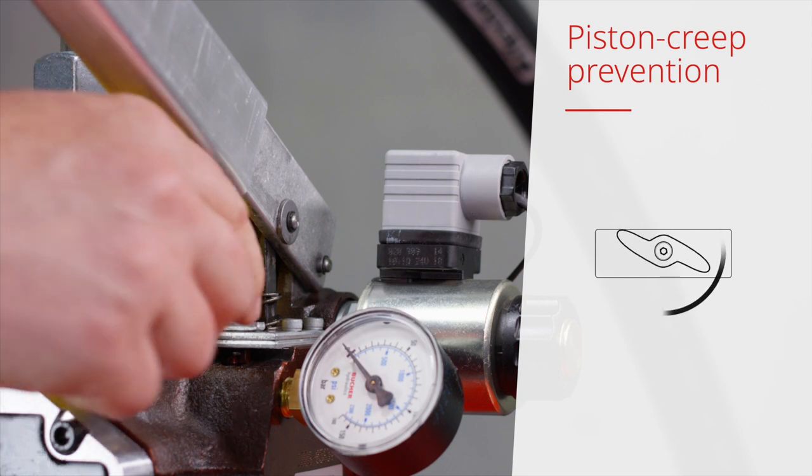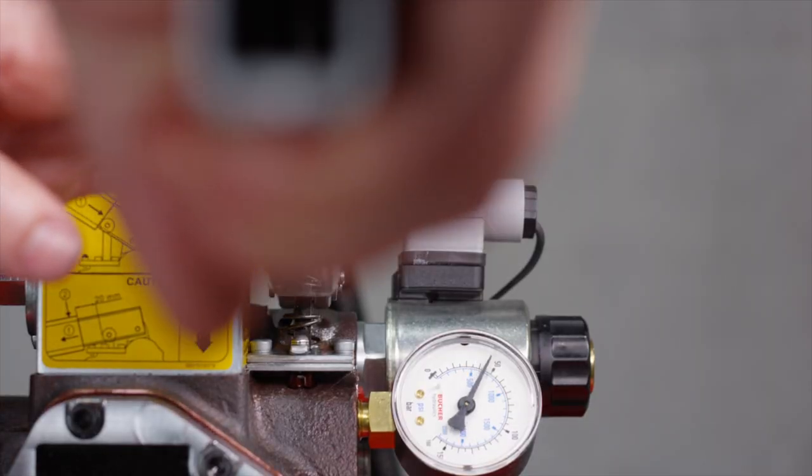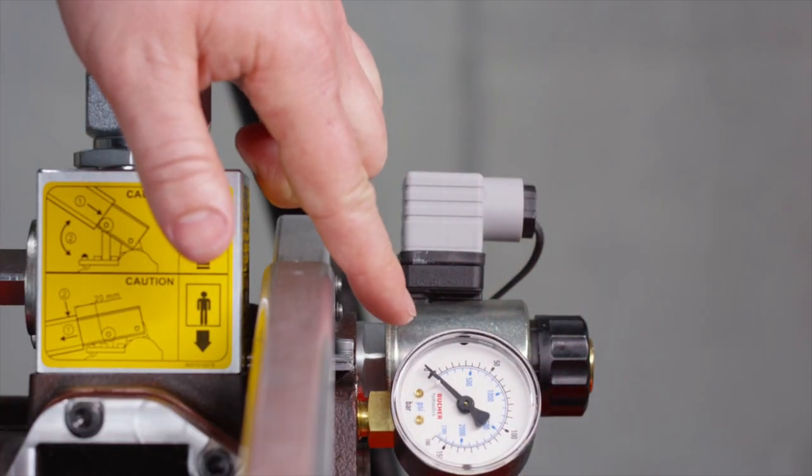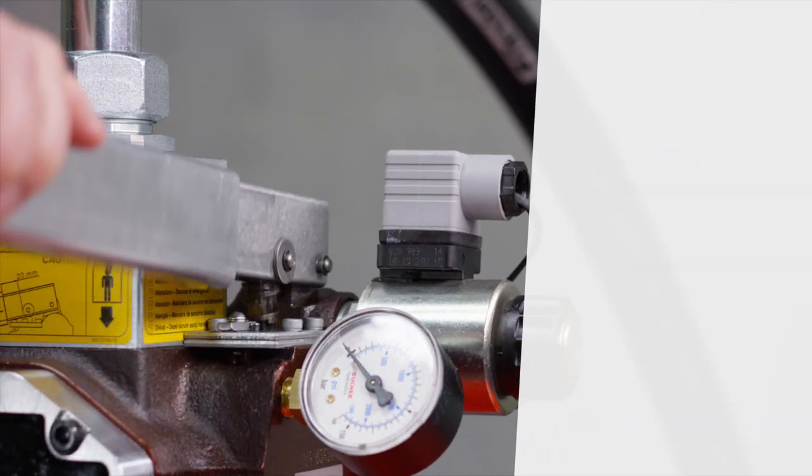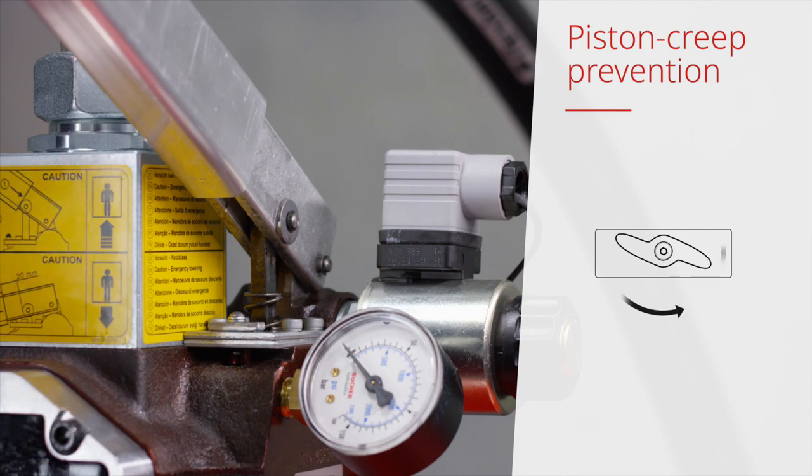Turn the piston creep preventer clockwise through 90 degrees. Push the hand pump handle down until the pressure is completely relieved. Turn the slack rope safety device counterclockwise to the original position.